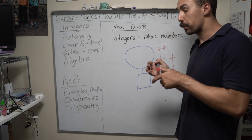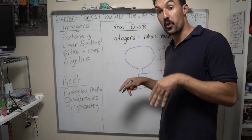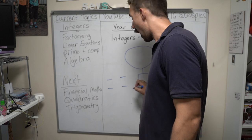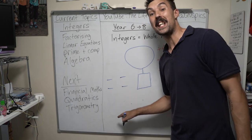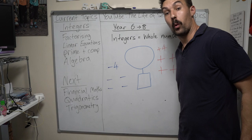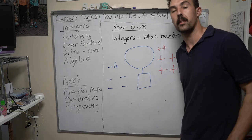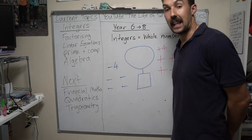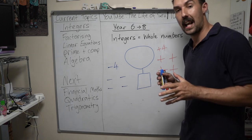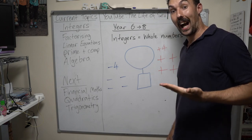If the hot air balloon right now was on the ground and it has four negative and four positive, does it take off? The answer is no. Because negative four and positive four cancel out. Negative four plus four equals zero. If we're on zero, we are on the ground.